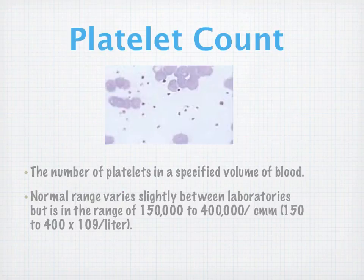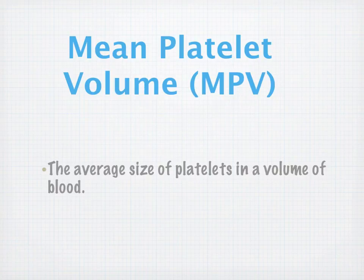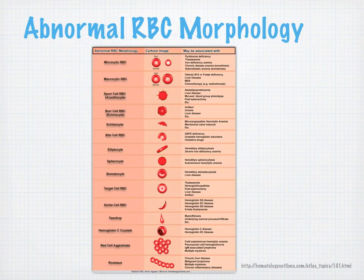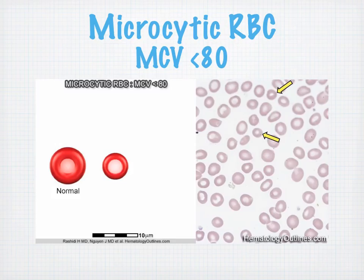The platelet count tells us the number of platelets in a specified blood volume, with normal ranges noted. Mean platelet volume is the average size of platelets in a volume of blood. Moving on to abnormal red cell morphology — referenced from hematologyoutlines.com, a fantastic atlas worth visiting. Microcytic RBCs have an MCV less than 80.